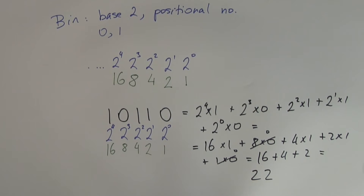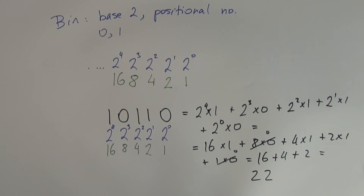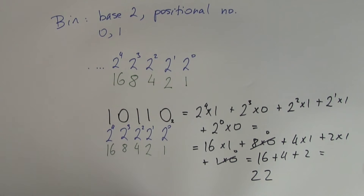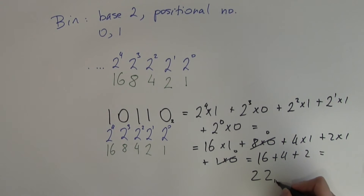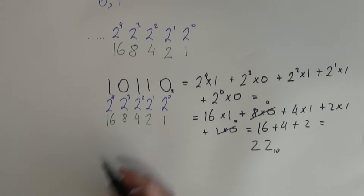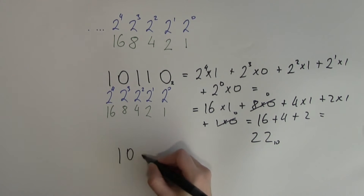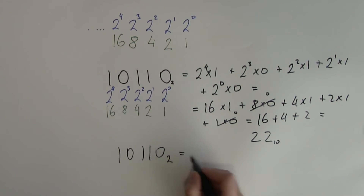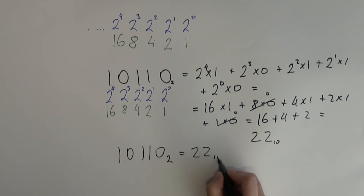If I wanted to be really precise, I should write a little subscript 2 next to the binary number, indicating it is a binary number, and a little subscript 10 next to the result, indicating it is a decimal number. So 10110 in binary is 22 in decimal.